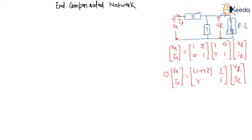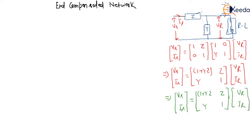So we can multiply this out: VS equals [1+YZ, Z; Y, 1] multiplied by [VR; IR]. Now we want to represent this in terms of ABCD parameters for the end-compensated network. We can convert this: A = 1+YZ, B = Z, C = Y, D = 1. So VS and IS are expressed in terms of VR and IR using these ABCD parameters.